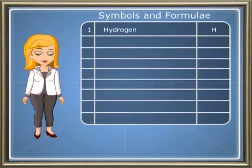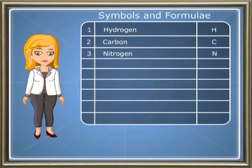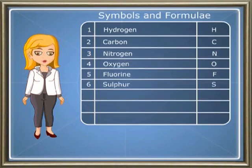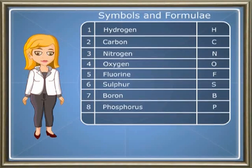Let us see such elements. For hydrogen, the symbol is H; carbon, C; nitrogen, N; oxygen, O; fluorine, F; sulfur, S; boron, B; phosphorus, P; and for iodine, I.